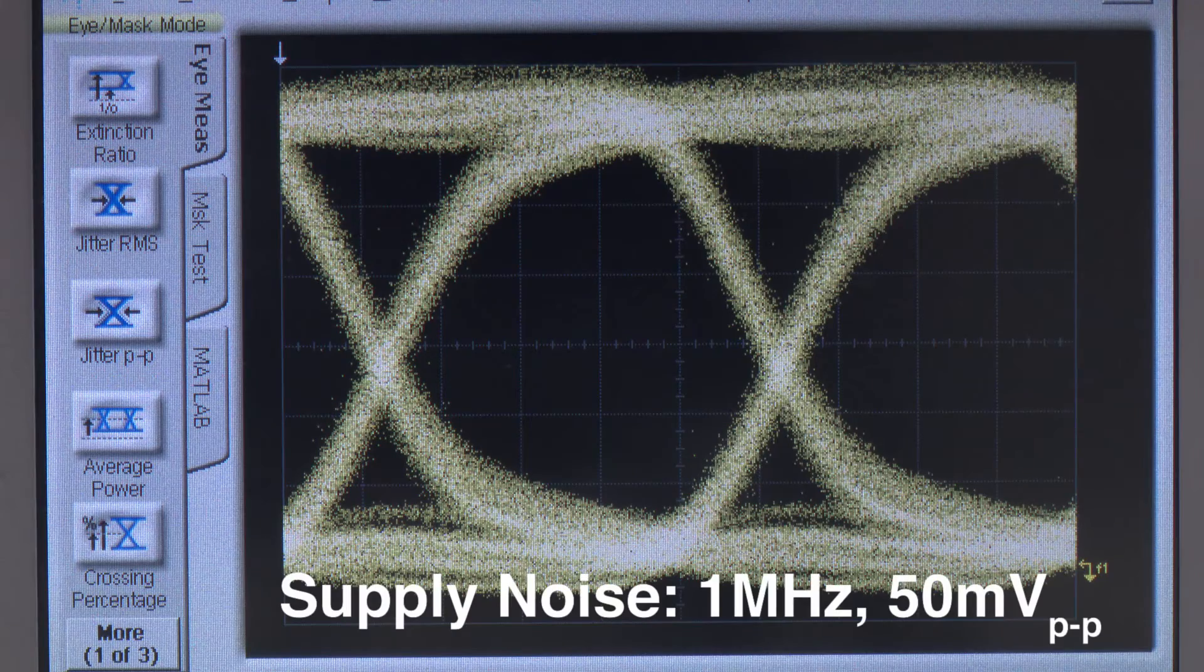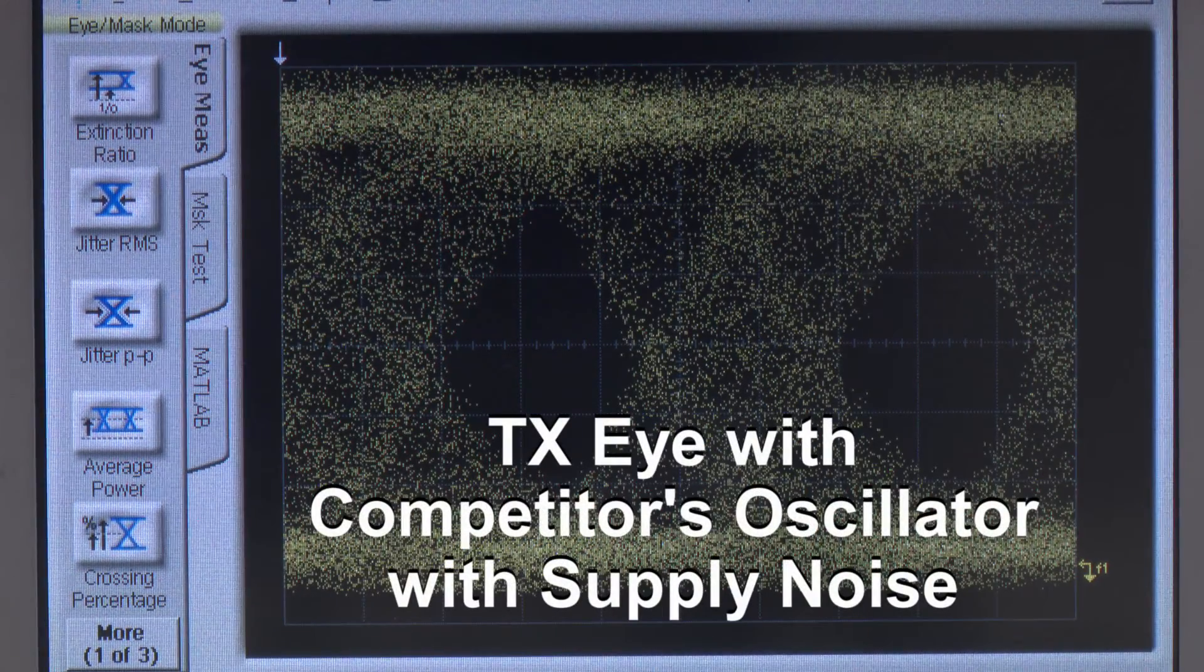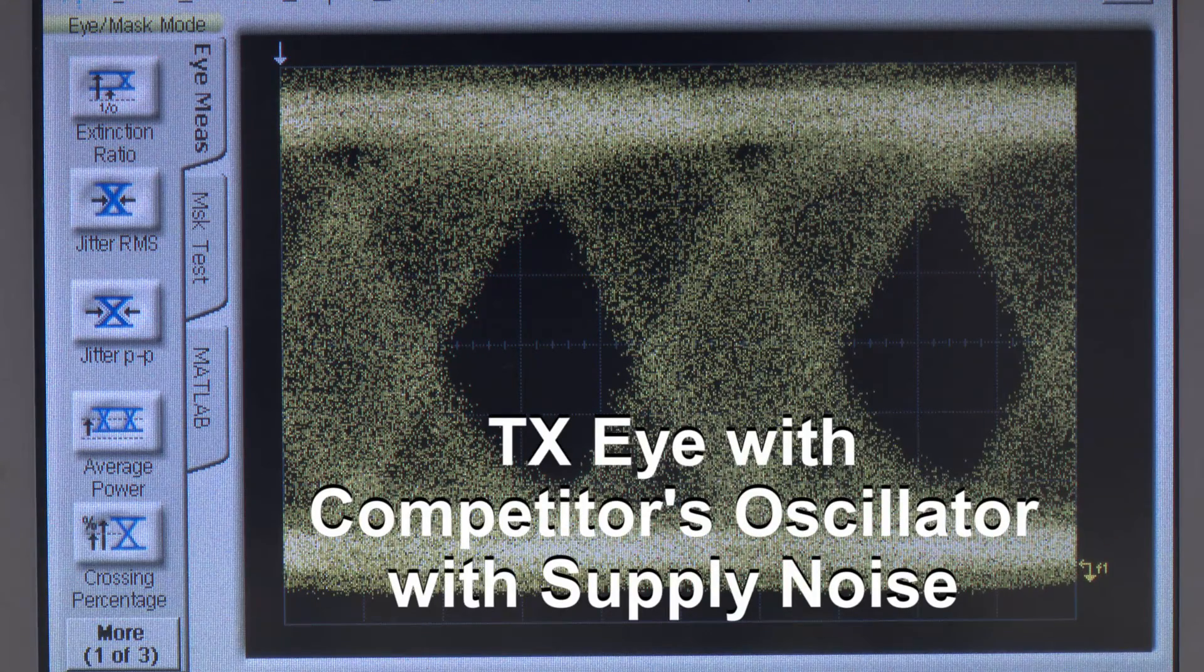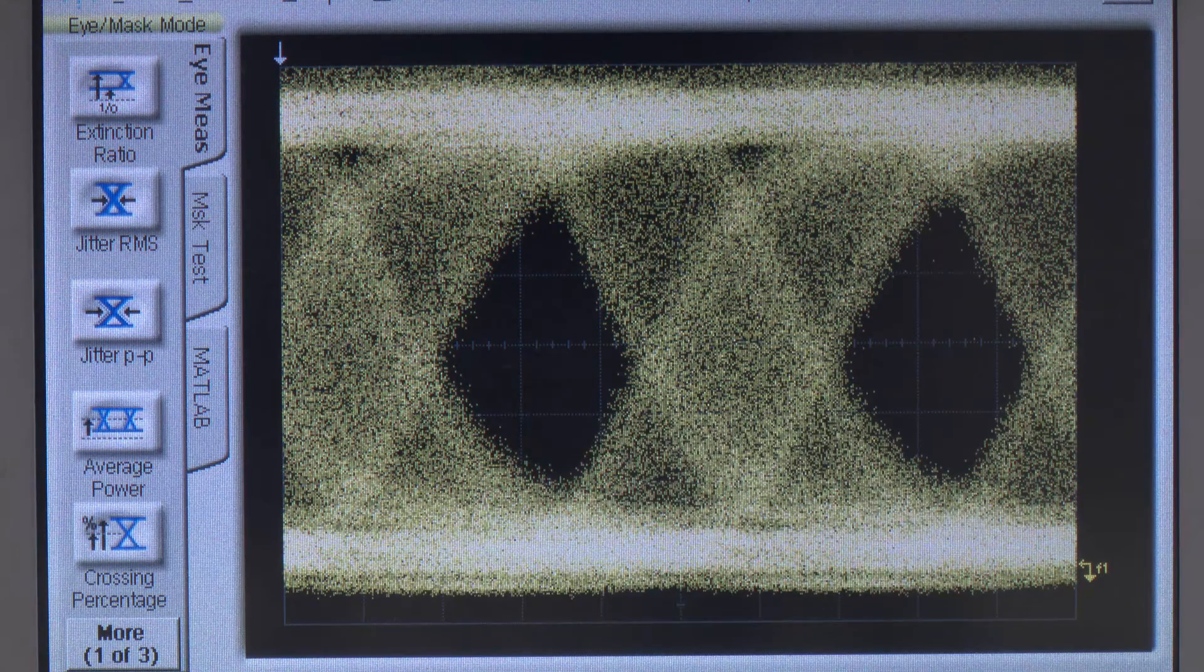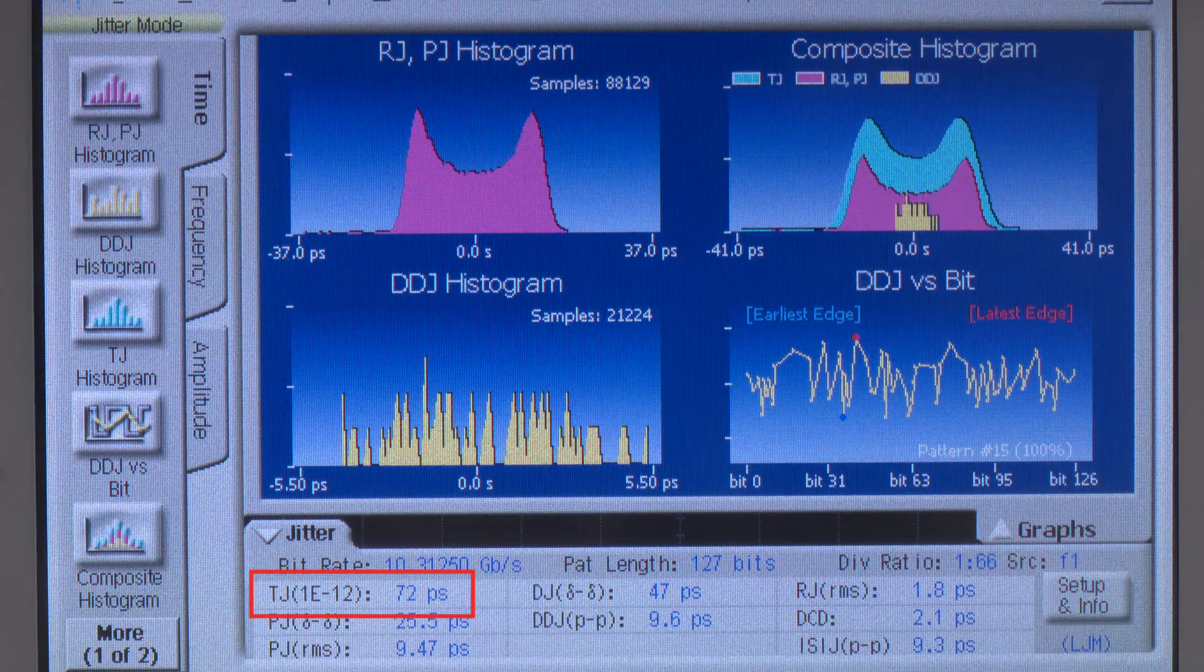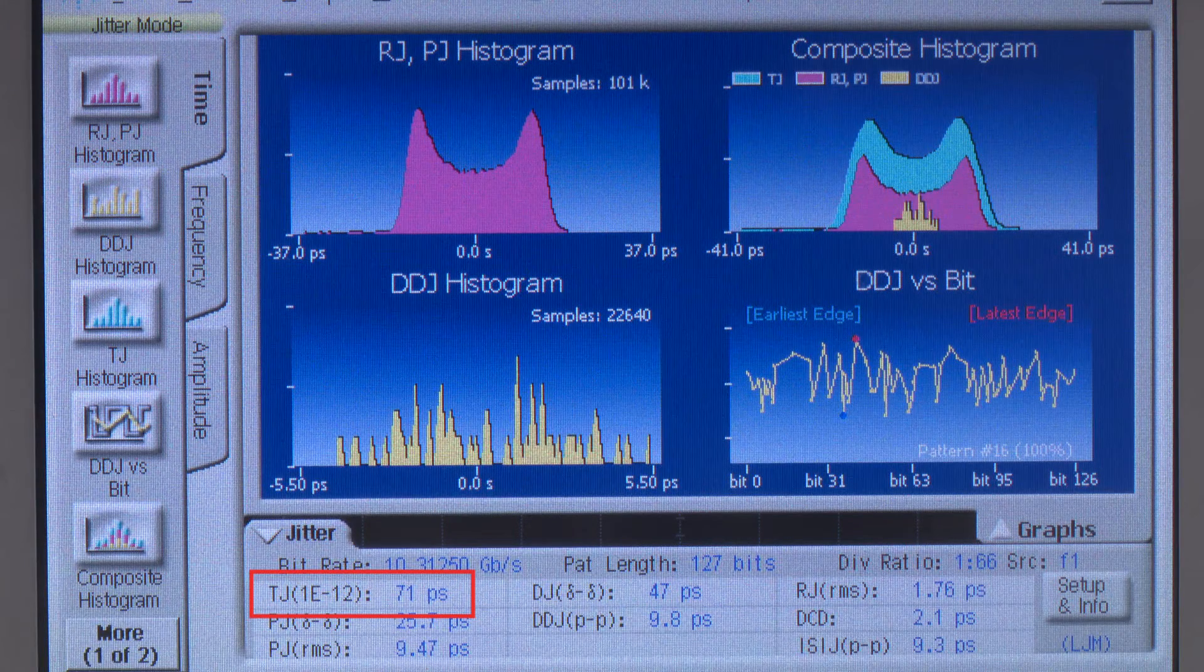By injecting noise on the competitor's part, we can clearly see the eye is degraded severely, limiting the overall throughput of the link. Looking at the total jitter with noise on the power supply on the competitor's part, there's now about 72 picoseconds of total jitter. That's a big difference.